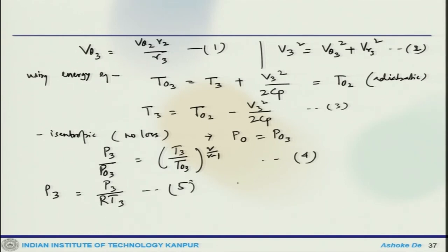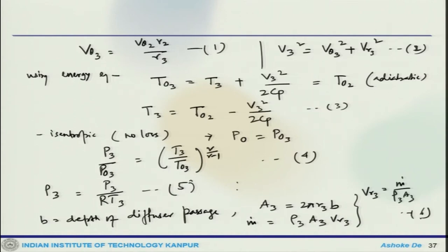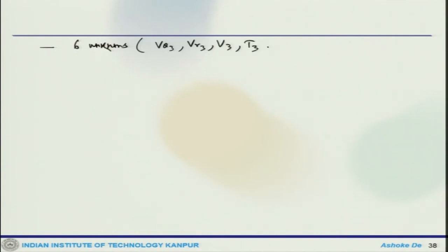Here, b is the depth of the diffuser passage. The area at station 3 is: A₃ = 2π r₃ b, and the mass flow rate is: ṁ = ρ₃ A₃ v_r3. This gives v_r3 = ṁ / (ρ₃ A₃) — equation 6. Looking at this equation, there are 6 unknowns: v_theta3, v_r3, v₃, T₃, P₃, ρ₃, and we have 6 equations.